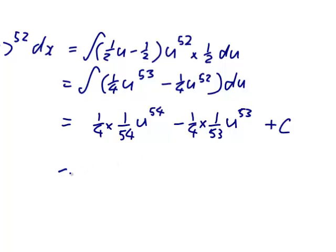And so let's see. 4 times 54. 4 times 50 would be 200. So 1 over 216. 4 times 53, and that would be 1 over 212.